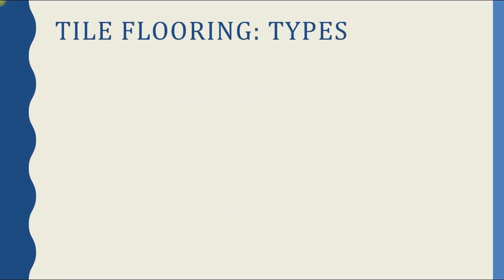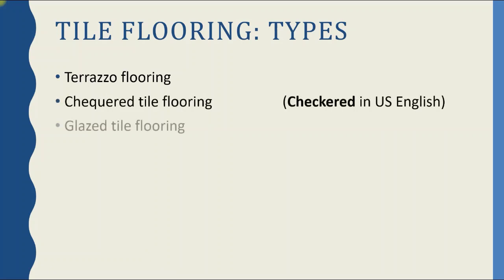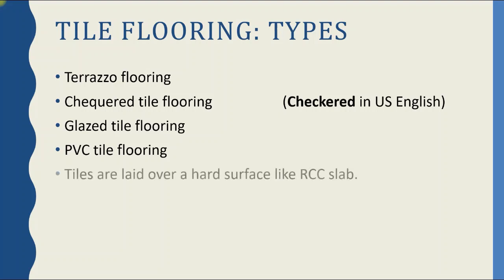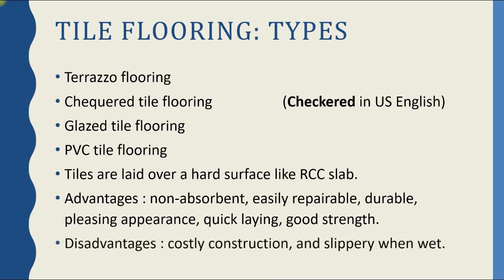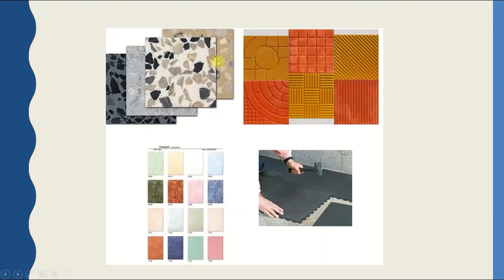The next flooring is tile flooring. Its types are: terrazzo tile flooring, checkered tile flooring, glazed tile flooring and PVC tile flooring. These tiles are laid over a hard surface like an RCC slab. Advantages: the surface obtained is non-absorbent, easily repairable (individual broken pieces can be replaced), durable, provides a pleasing appearance, is quick to lay and provides good strength. Disadvantages: the cost of construction is very high and the floor becomes very slippery when wet, especially glazed tile flooring.